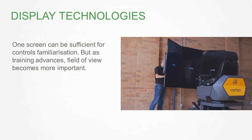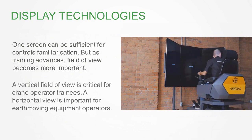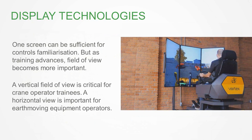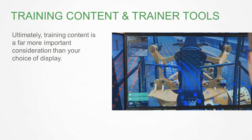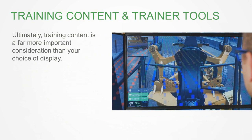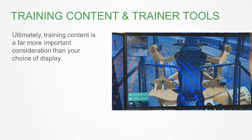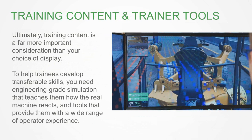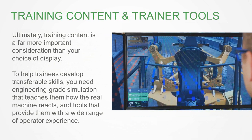Screens can come in many different shapes and sizes. In general, a vertical screen is good for cranes, where you want to see your boom tip and landing points, and horizontal is good for earth moving, where you want to check your blind spots as you're turning. Something to consider is where your field of view is for your visual solution. Ultimately, though, really what we're pushing is the idea that training content is much more important. The training content will really help your trainees transfer skills into the real world.